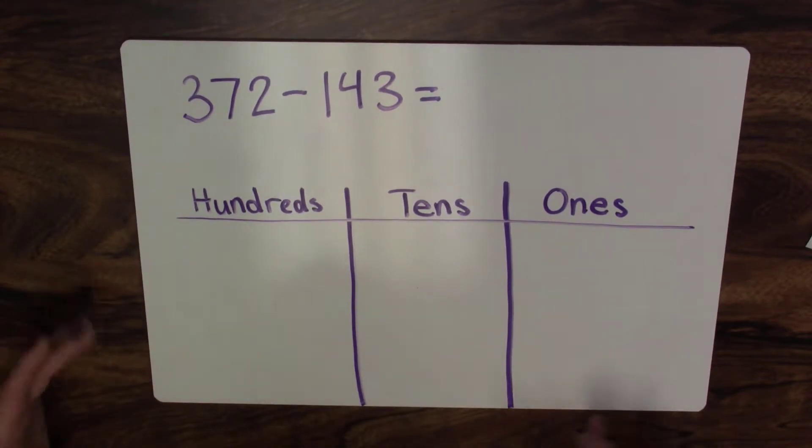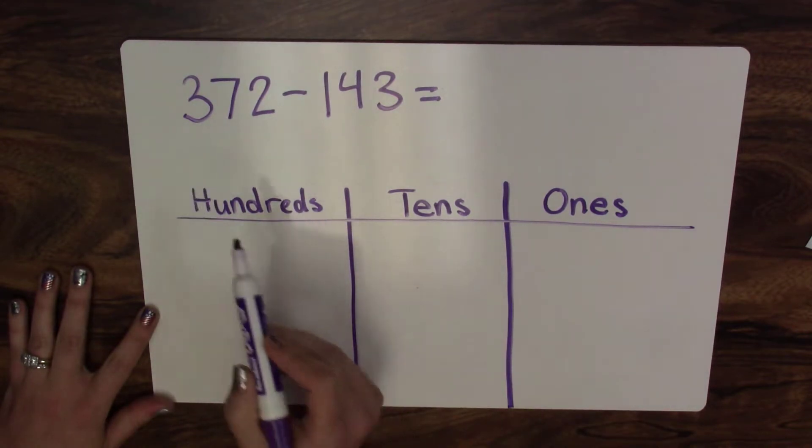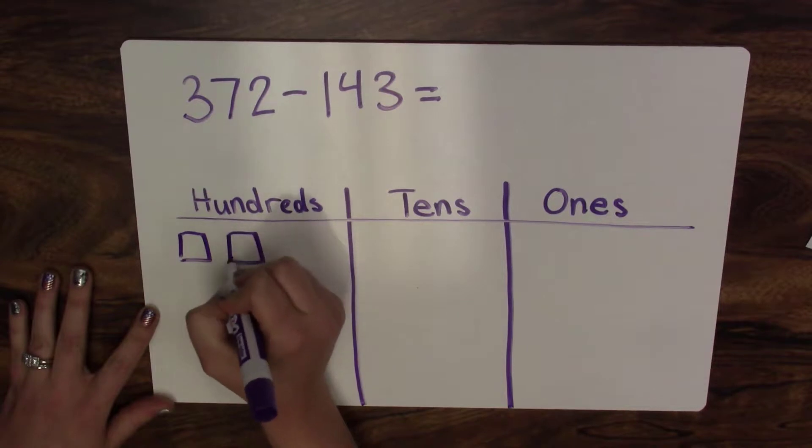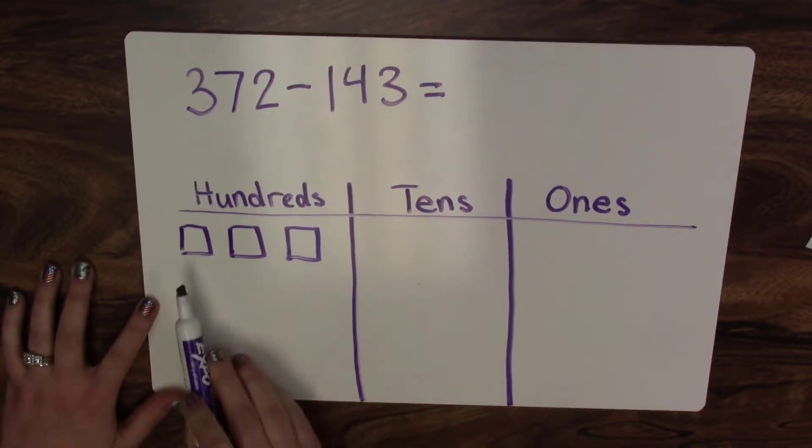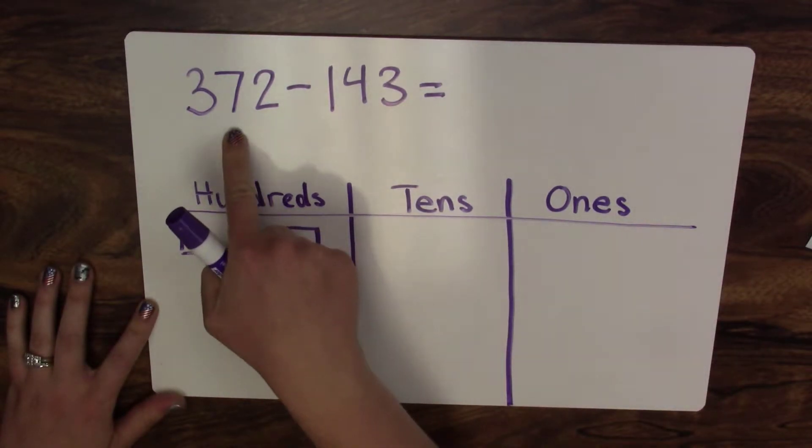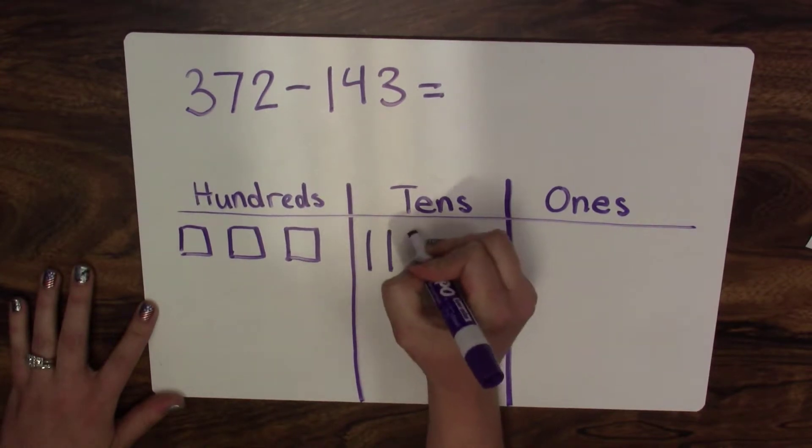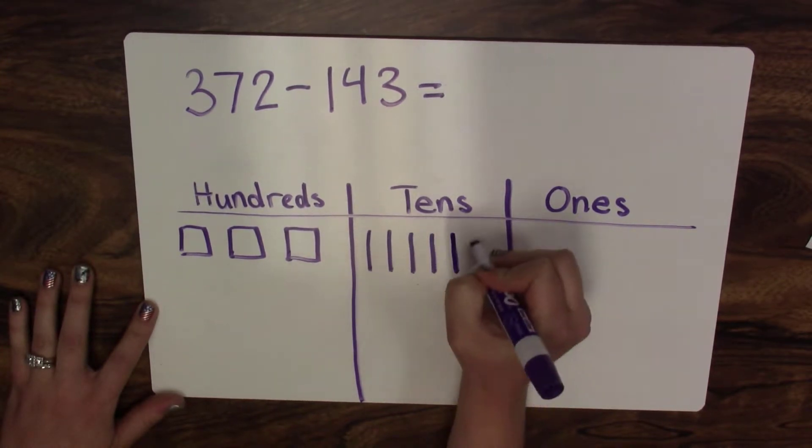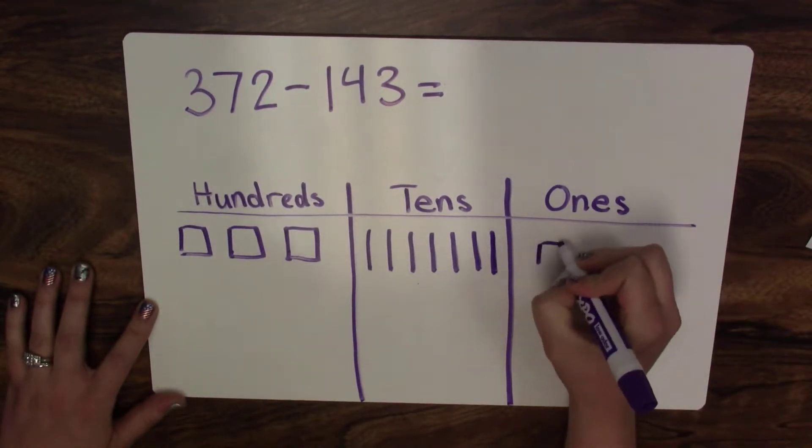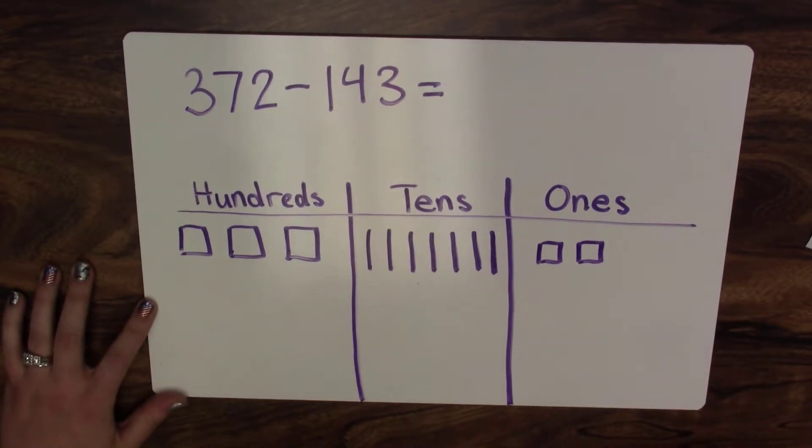Because I'm taking away, it's a subtraction equation. I'm going to start by building my first number. I'm going to take three hundreds because there are three in the hundreds place. Then I'm going to look at my tens place value and there are seven, so I know I need seven ten rods. And then I look at my ones place value and I know I need two unit blocks. So that's how I'm going to model that on my place value chart.